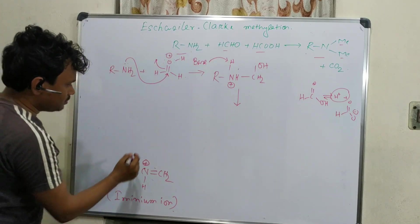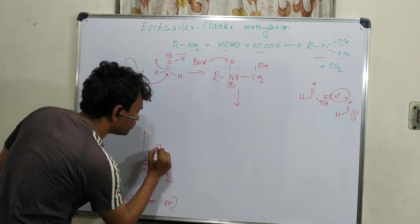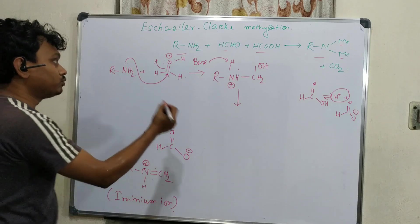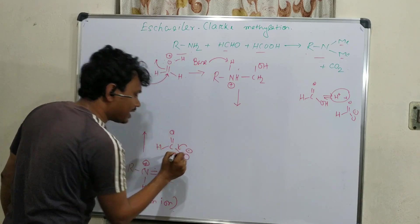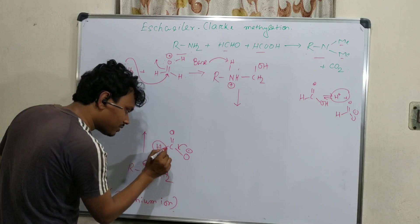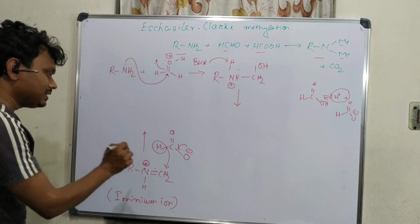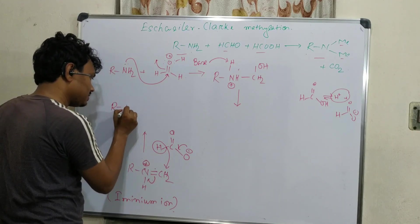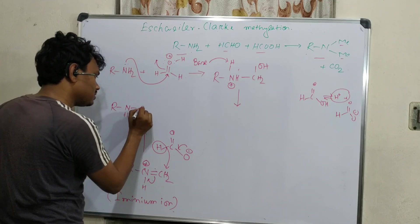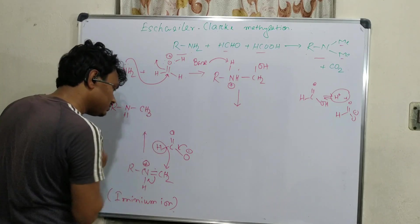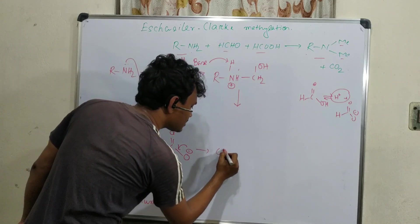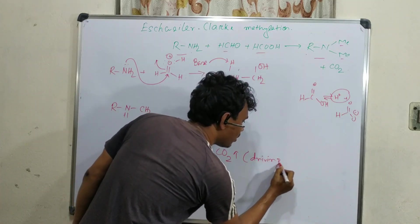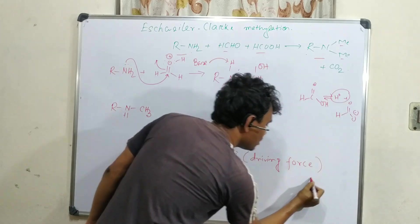The iminium ion further reacts with formate. The formate ion decomposes and produces hydride, which attacks the iminium ion. When the hydride attacks, the ultimate product is R-N-CH₃. This also produces carbon dioxide, and this elimination of CO₂ is the driving force for the reaction because CO₂ is a gas and escapes, and the hydride generated acts as a reducing agent.